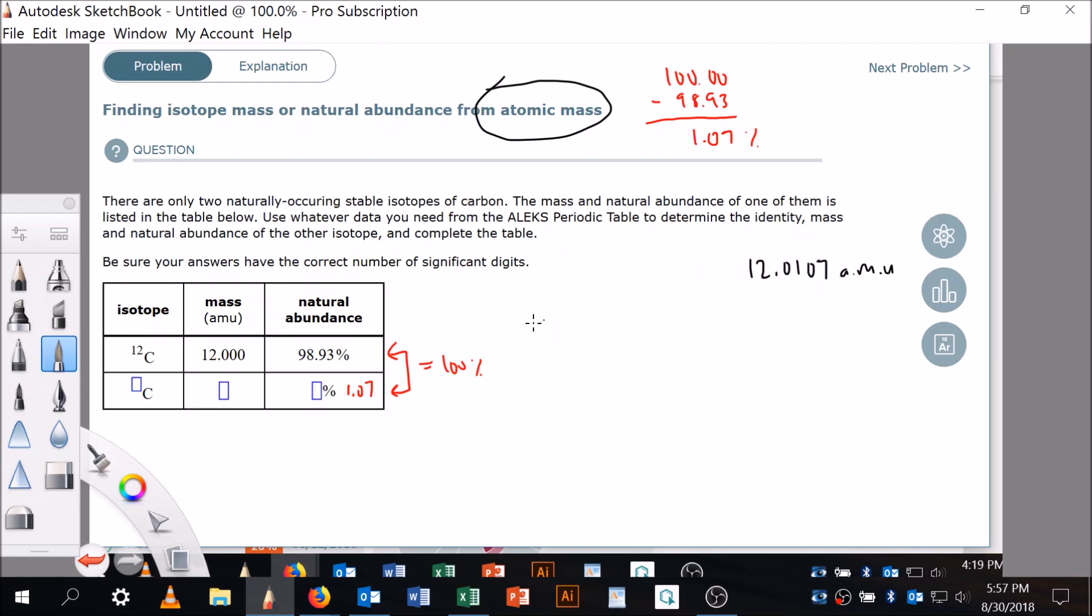So what we're going to say is we're going to take isotope X and take the percentage of isotope X, plus isotope Y and the percentage of isotope Y, and say that this is equal to my average mass, right, just by definition of a weighted average.